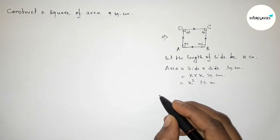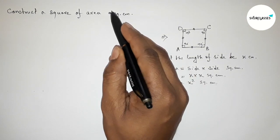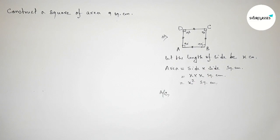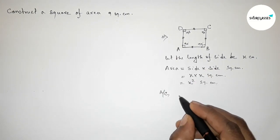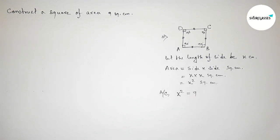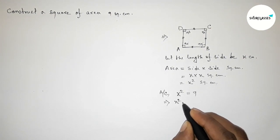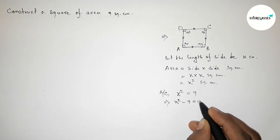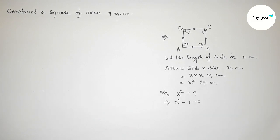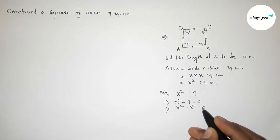According to the condition, the area x² must equal 9 square centimeters. So x² equals 9. To find x, we write x² minus 9 equals 0, which is x² minus 3² equals 0.